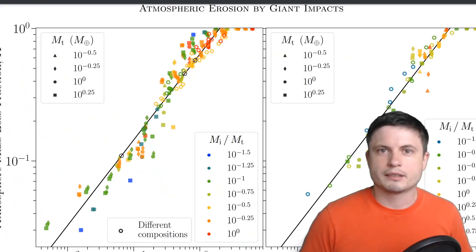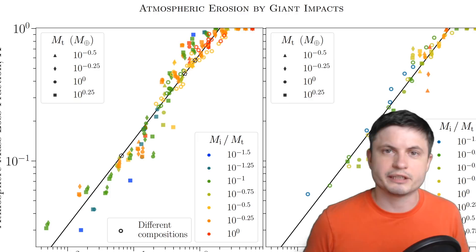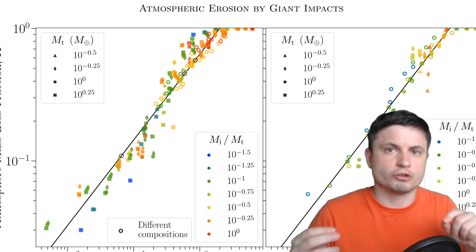But for this study they ran about 100 different detailed simulations of various types of planets colliding and were then able to discover that there's actually a very interesting almost linear relationship between the angle and the mass of the objects colliding and the amount of atmosphere that is lost because of the collision.